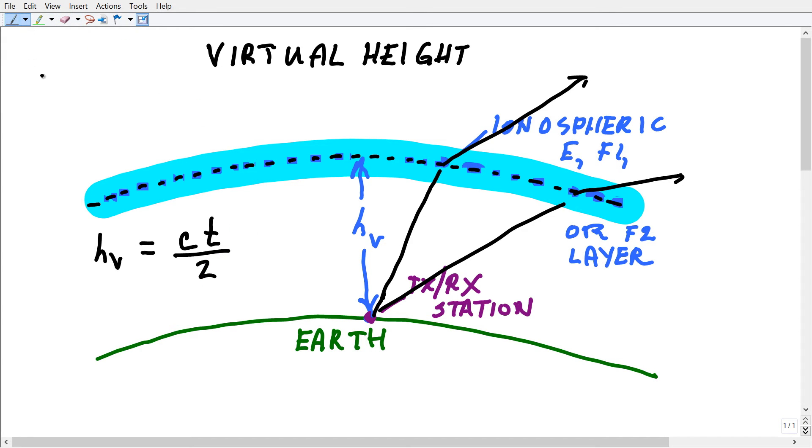So the units that we use: t in seconds, c in meters per second, and h sub v in meters. You divide that figure by 1000 and you'll get the virtual height in kilometers.